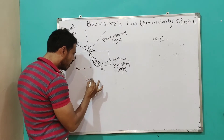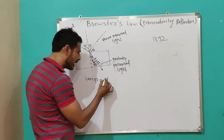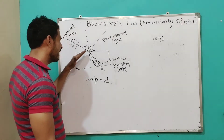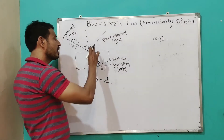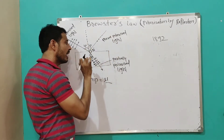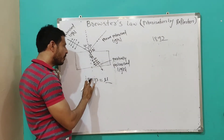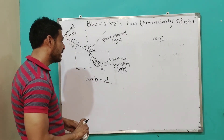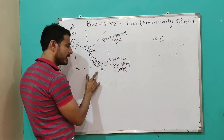Then the tangent of the angle of polarization, that is tan IP, is numerically equal to the refractive index of the refracting medium. When the light is incident on a transparent medium at the polarizing angle, the reflected light becomes a plane polarized light, and the refracted ray will be partially polarized.